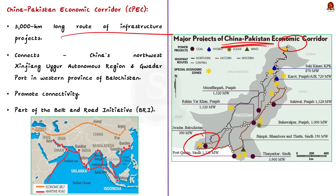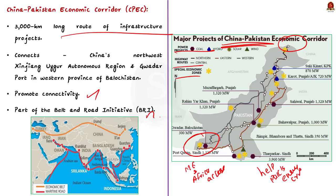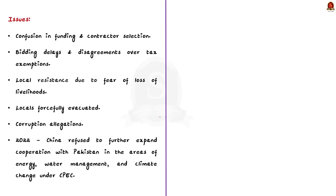The CPEC project will give China access to the Middle East and Africa from the Gwadar port through the Indian Ocean. In return, China will support development projects in Pakistan to overcome its energy crisis and failing economy. CPEC is also part of the Belt and Road Initiative. However, the project has stalled due to troubles since 2016, including confusion in funding, confusion in contractor selection, bidding delays and disagreements over tax exemption.